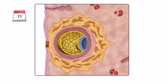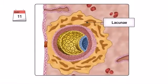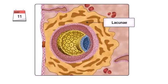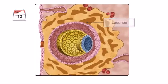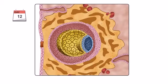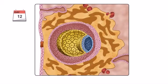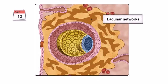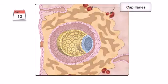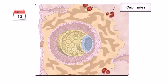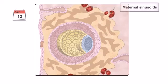Small holes called lacunae begin to form in the syncytiotrophoblast as it continues to expand. By day 12, the lacunae stop growing and fuse to form large interconnecting spaces called lacunar networks. Capillaries in the endometrium surrounding the developing embryo dilate, forming maternal sinusoids.